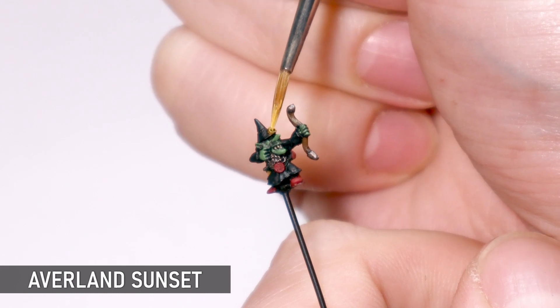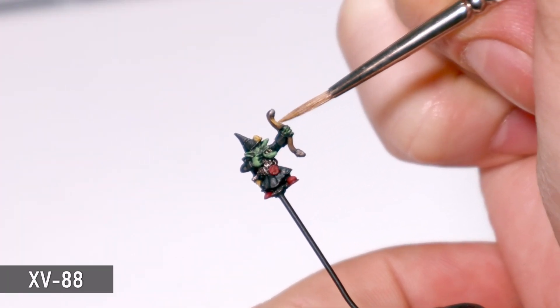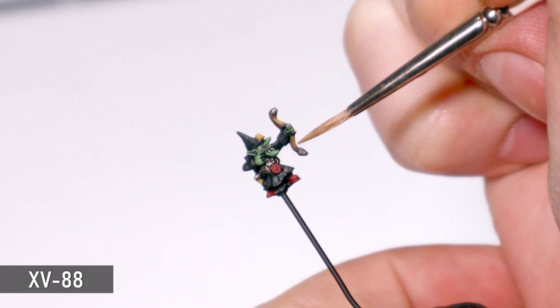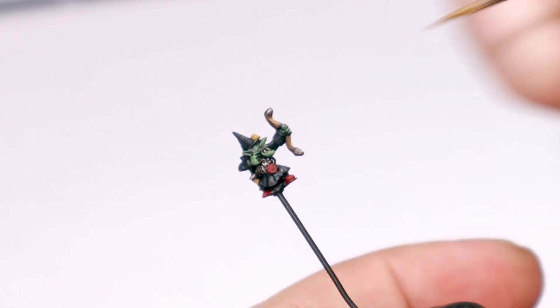You can also fix up any mistakes in this phase. Sometimes a wash can highlight things you may have missed previously, and sometimes I even completely change colors here if they're not quite working with the overall piece.